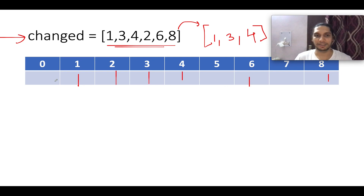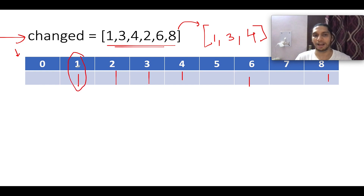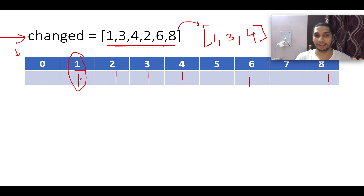Next, I start the iteration from index zero going through all the numbers. The first element with a non-zero frequency is 1. Since I see a non-zero frequency, I check the frequency of double its value — that is 2 — which also happens to be 1. I then reduce the frequency of both elements by one, so both become zero.